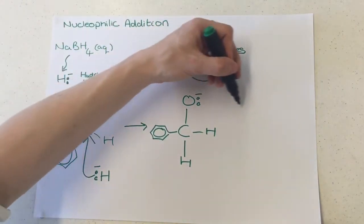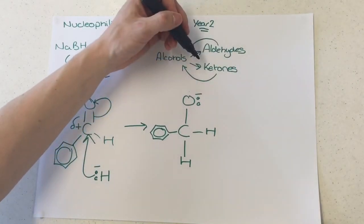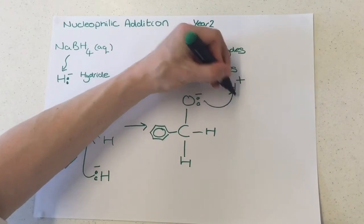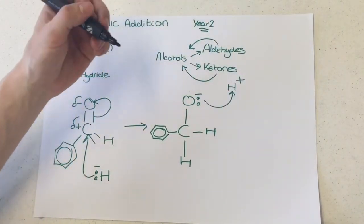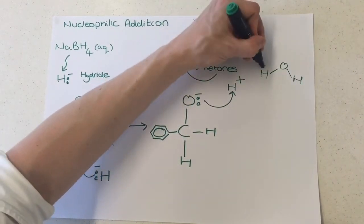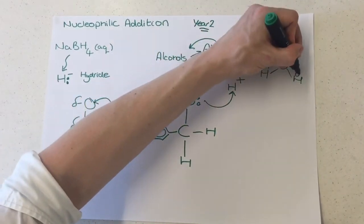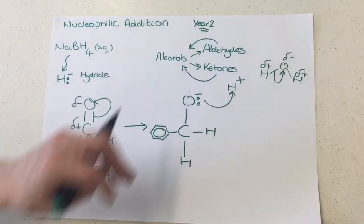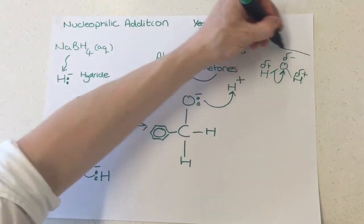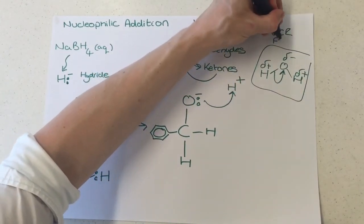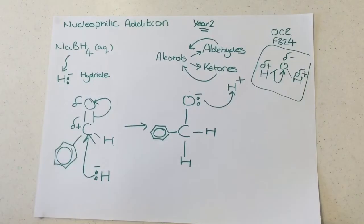Now, there's numerous ways you can do the next step here to finish forming the alcohol. You can either simply attack an H+, or you can have a molecule of water. But with the molecule of water, do be careful, because you would need to show the dipoles on there, and you would need to show the movement of the electrons here onto this oxygen. I think that creates work, but specifically, this has come up on an OCR F324 paper in previous years.